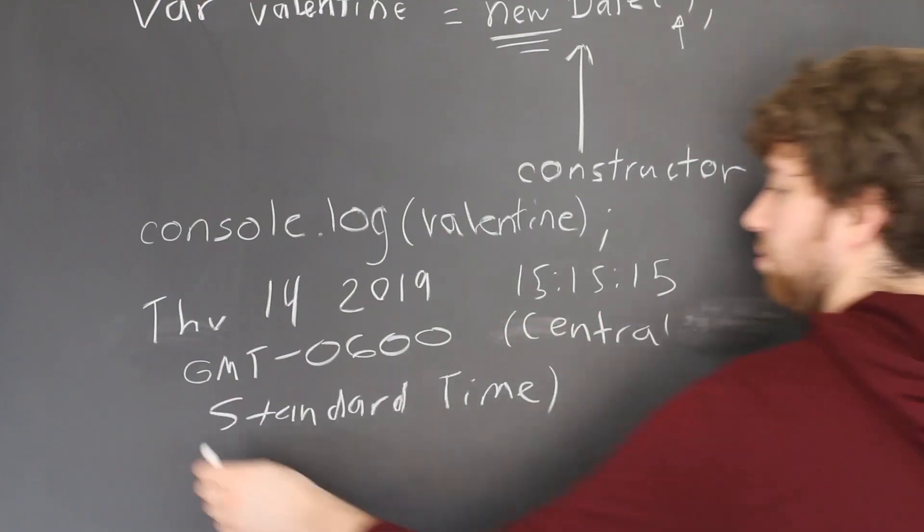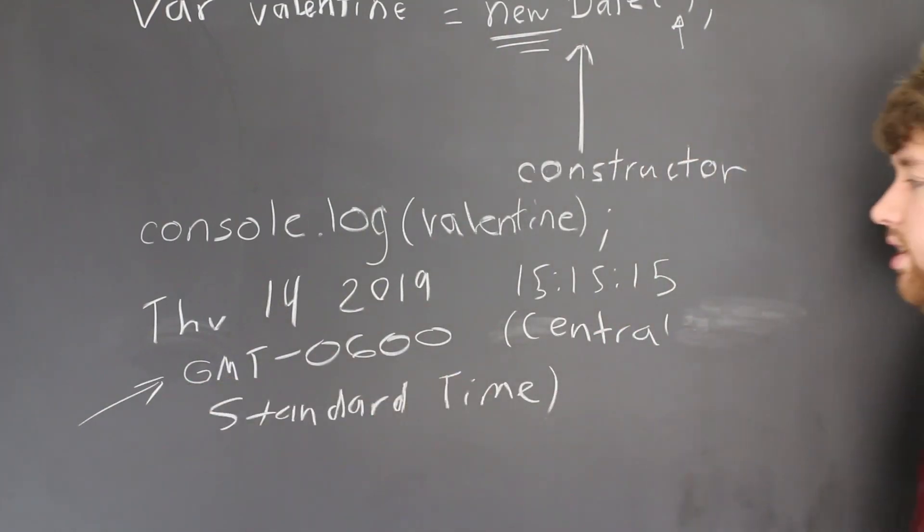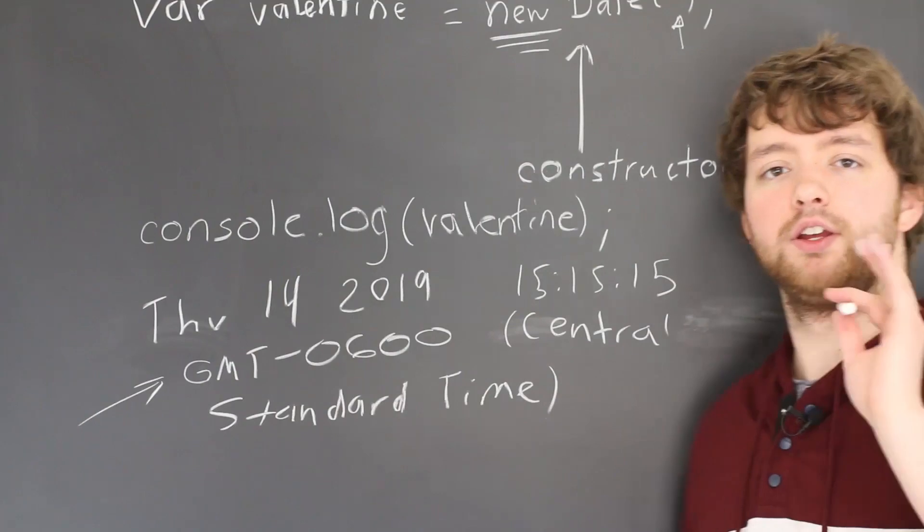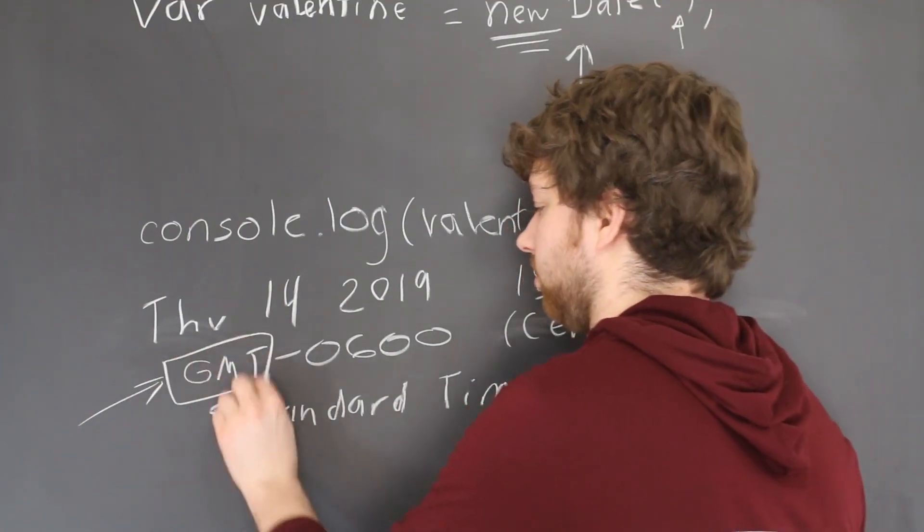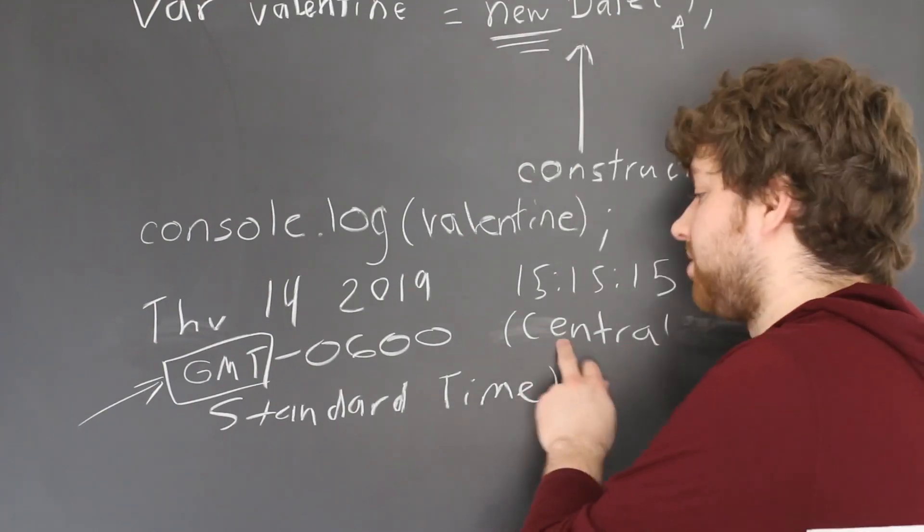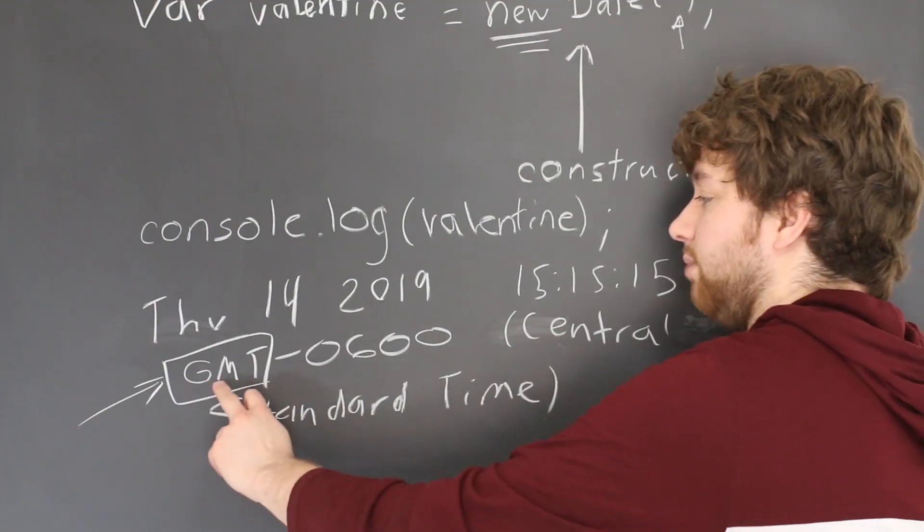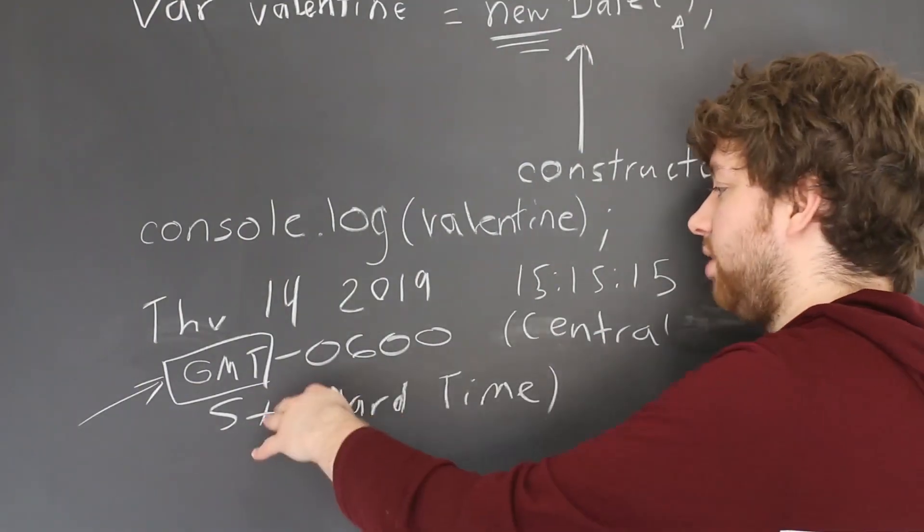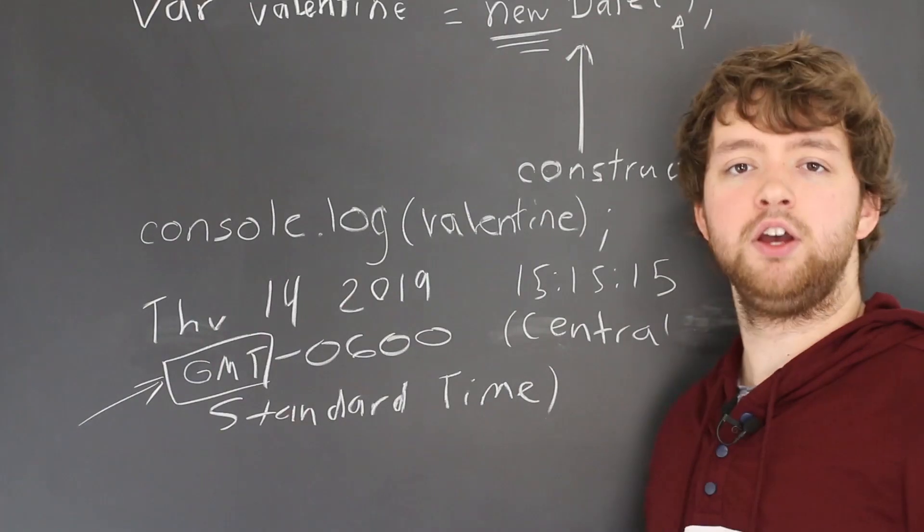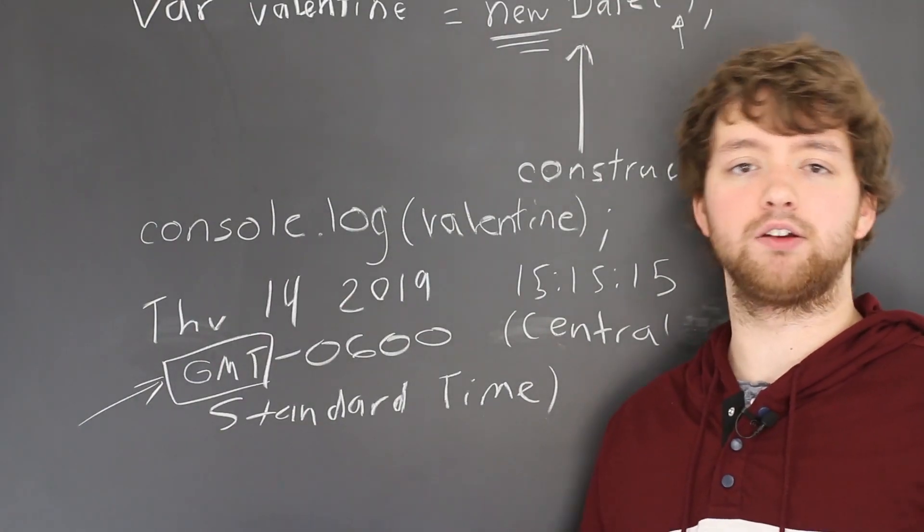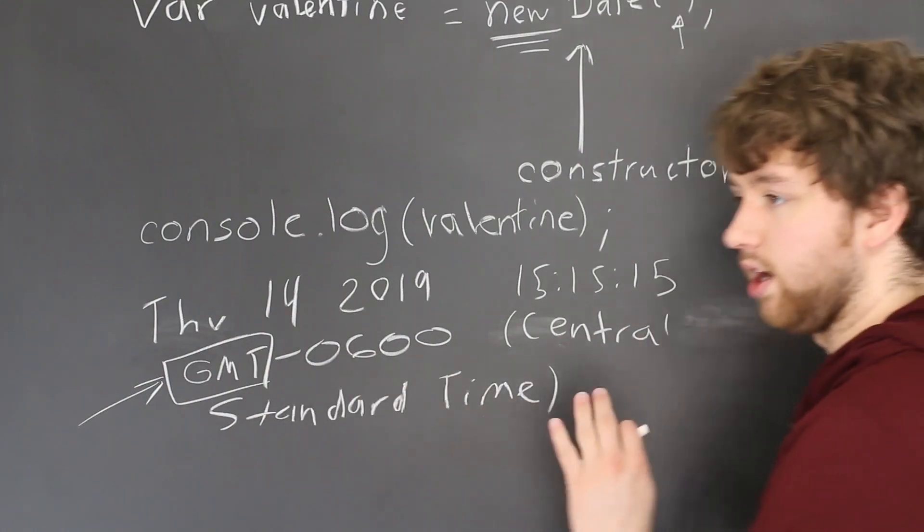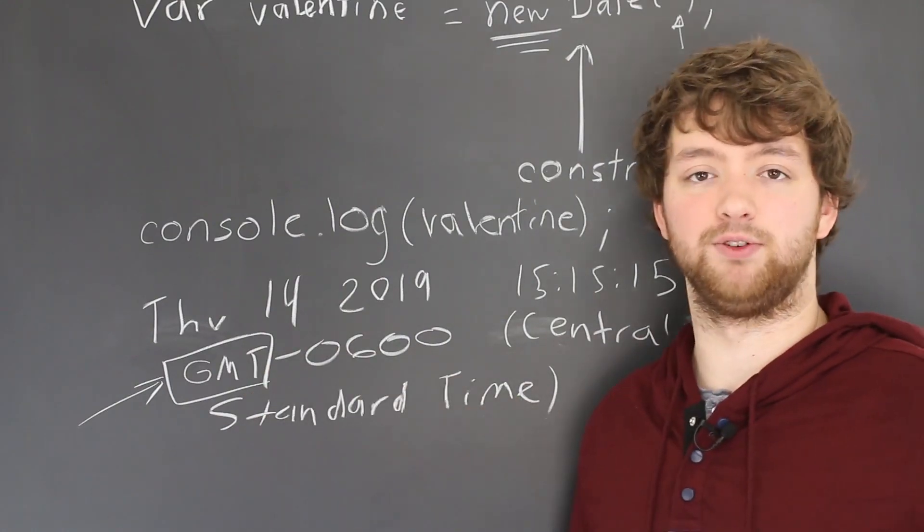So as for this actual number, you might be wondering like, what is that? What is GMT minus 0600? Well, there is a standard time zone known as GMT. That's kind of like what the rest are based off of. So you can think of central standard time as GMT minus six hours. So you might see GMT minus five or GMT minus four or plus three, whatever. It's basically a way to standardize the time. You generally don't have to worry a whole lot about this part here though, because it's going to update automatically based on the time zone of your computer.